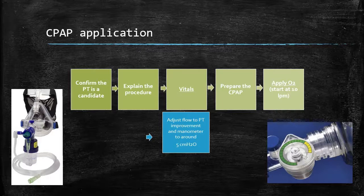We're explaining the device, letting them know that it's going to help them breathe a lot easier, it's going to help with their work of breathing, and it's going to make them feel a lot better. Let them know they may feel a little claustrophobic, but we're going to do this together. Let them know they're going to feel pressure and air rushing towards their face, and that it's going to help open up their lungs so we can potentially give them some more medication. We get the set of vitals, make sure they meet the 90 systolic criteria, then prepare the CPAP and apply it to oxygen.